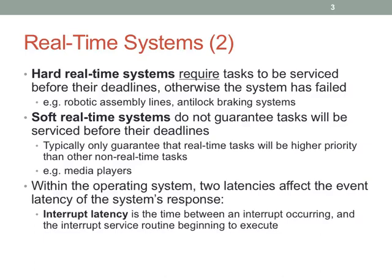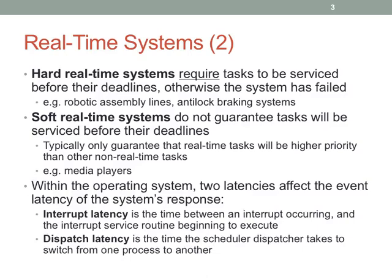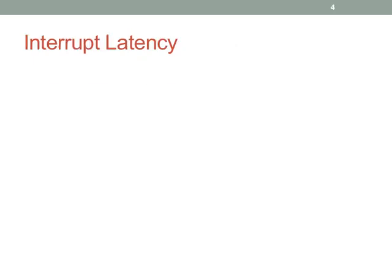There are two key latencies in the system's response. Interrupt latency is the time from when the interrupt line goes high or low into the processor until the interrupt service routine actually runs. Dispatch latency is the time needed to switch to the process responsible for handling the task. If the interrupt service routine handles the problem directly, there's no dispatch latency — you just switch into the kernel, take care of it, and switch back. But if it's implemented as a separate process, dispatch latency definitely plays a role.